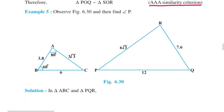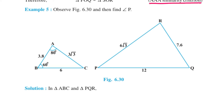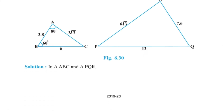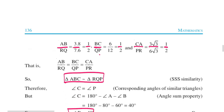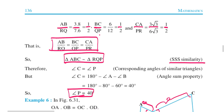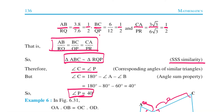Example 5: Given the ratio of sides and two angles, we are supposed to find angle P. In triangles ABC and PQR, AB upon QR equals 3.8 upon 7.6, which equals 1/2. BC upon QP equals 6 upon 12, again 1/2. CA upon PR equals 3√3 upon 6√3, again 1/2. All three side ratios are in proportion, so by SSS similarity it is a similarity. Therefore angle C equals angle P. Angle C equals 180 minus angle A minus angle B, which equals 40 degrees. So angle P equals 40 degrees.